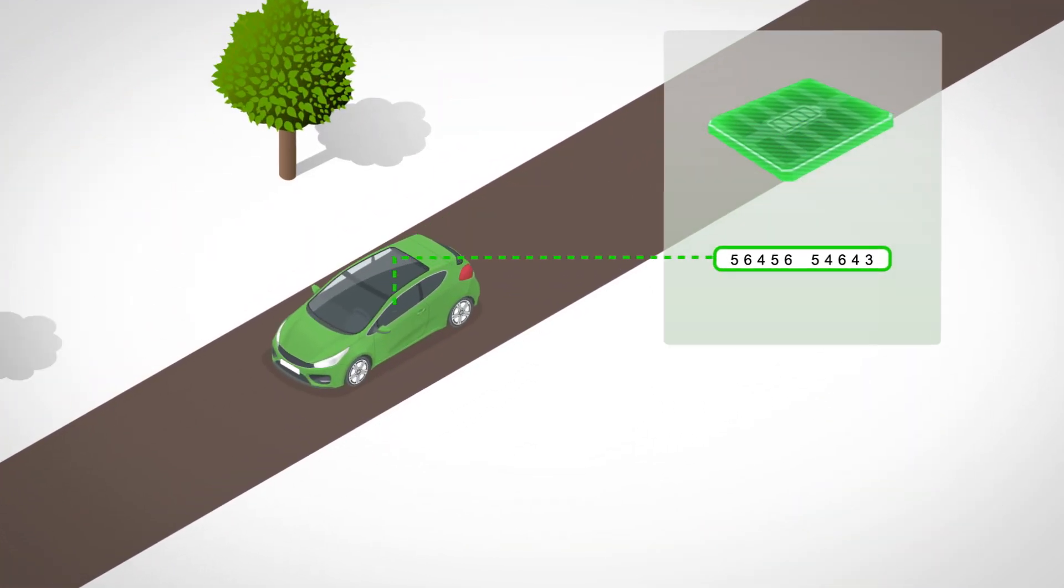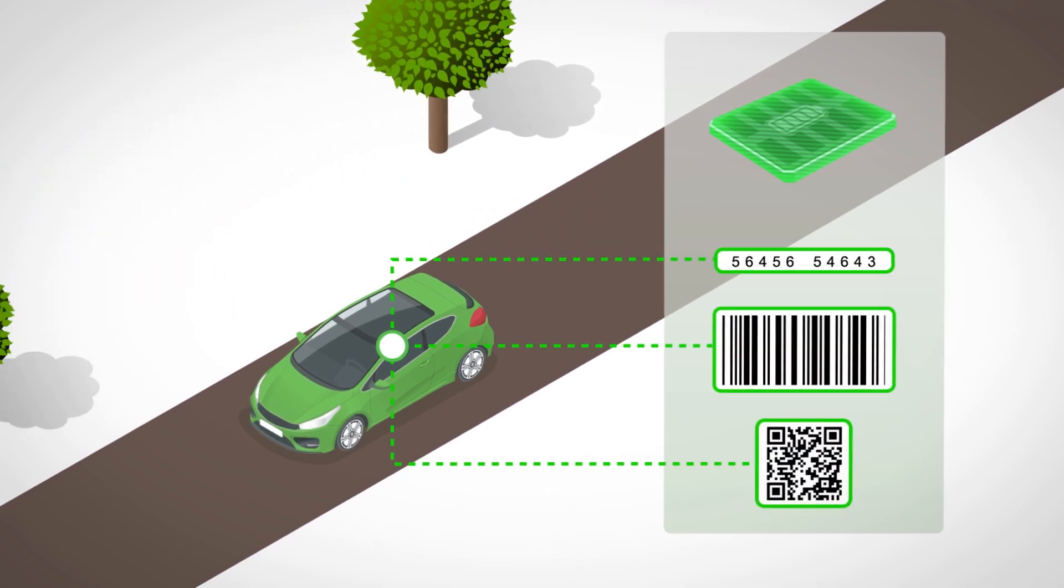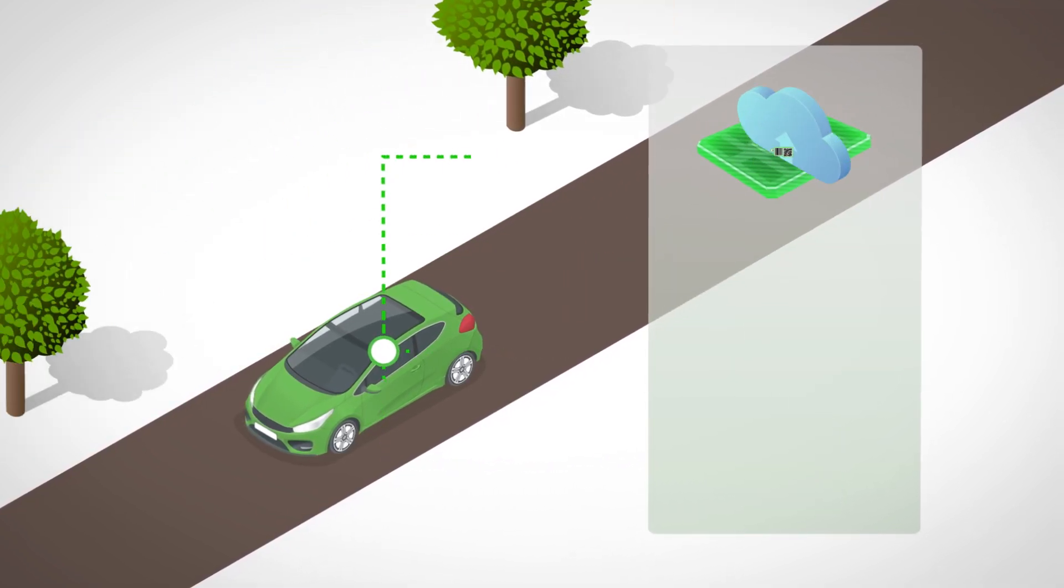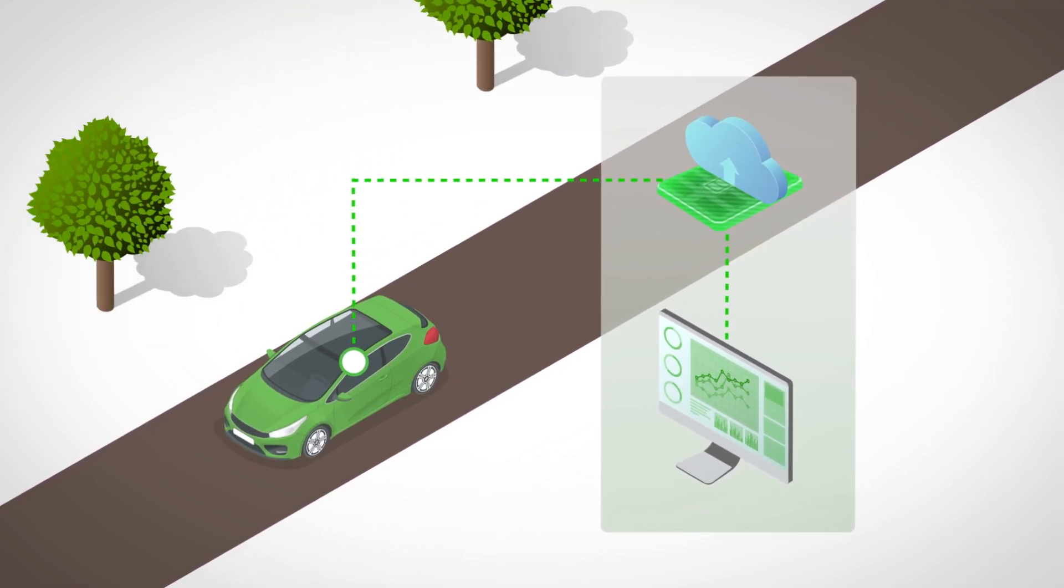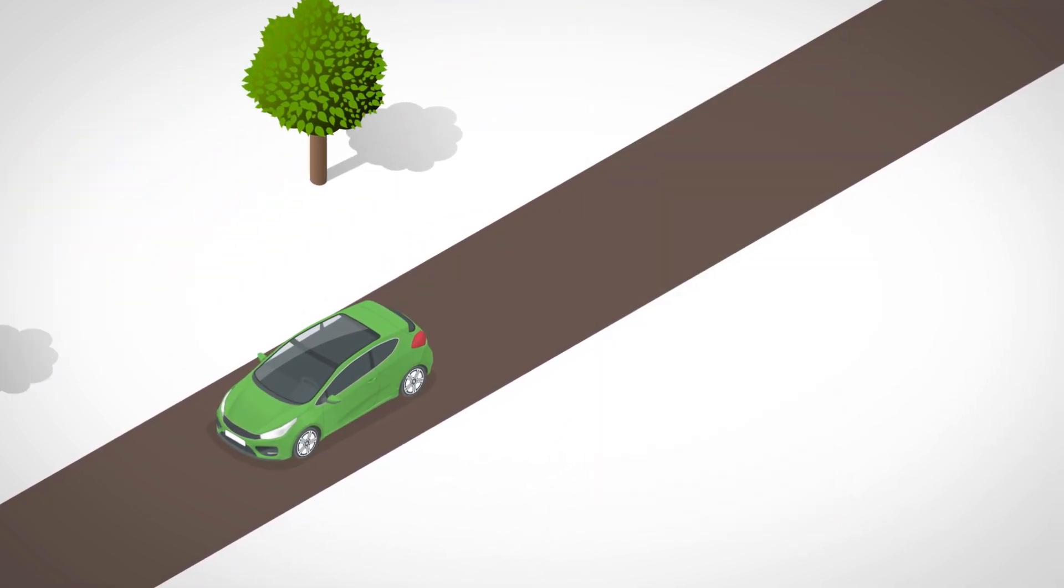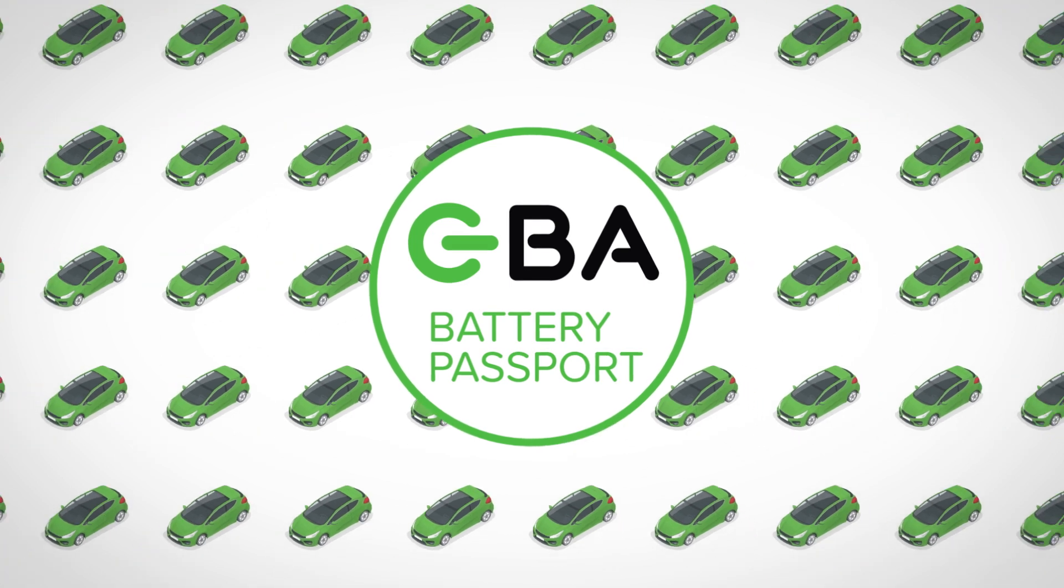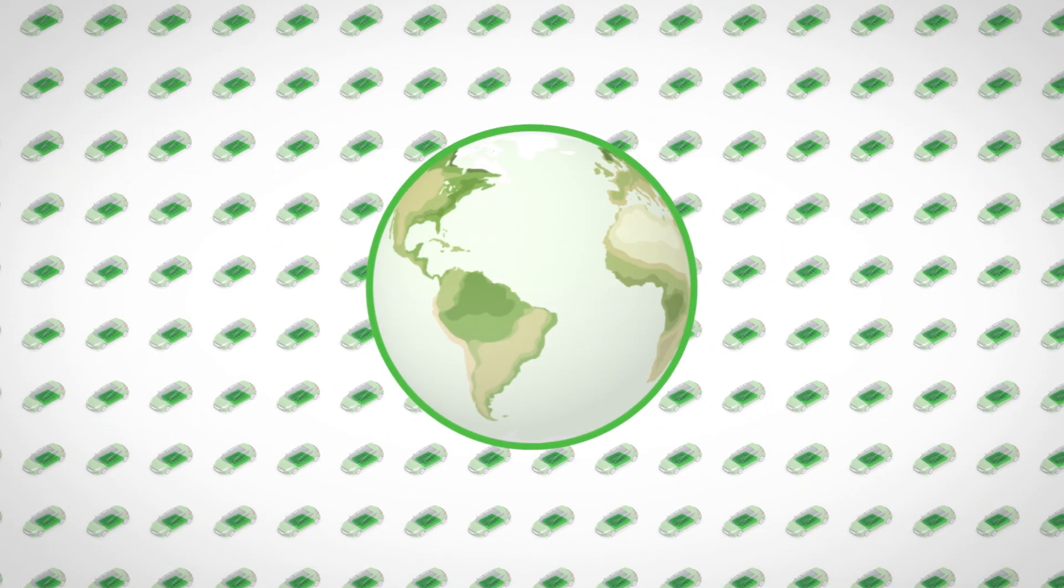The battery gets an ID number, a barcode, and other information which are sent to the digital twin in the cloud. The digital twin holds all the important information about that battery, and the Battery Passport platform holds all of the digital twins from all over the world.